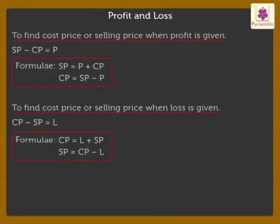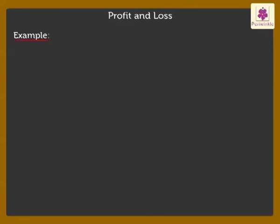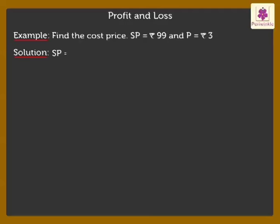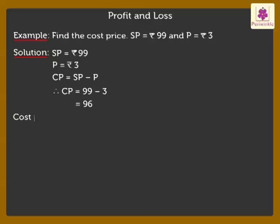Now let's solve an example to understand it in a better way. Find the cost price if selling price is 99 rupees and profit is 3 rupees. Thus, cost price is equal to selling price minus profit. Therefore, cost price is equal to 99 minus 3, which is equal to 96. Thus, the cost price is equal to 96 rupees.